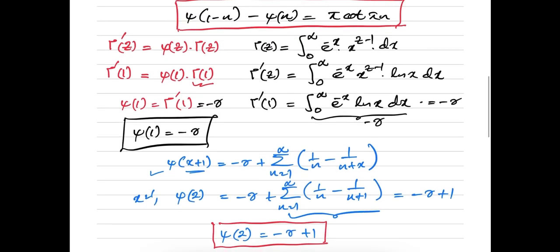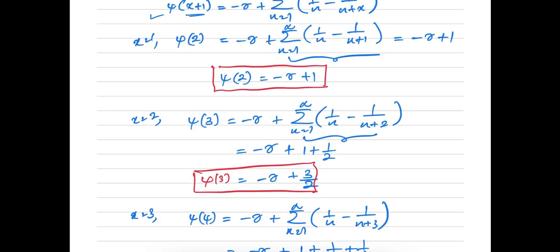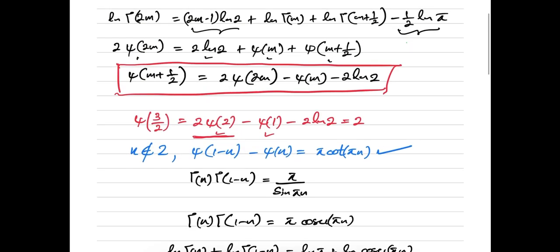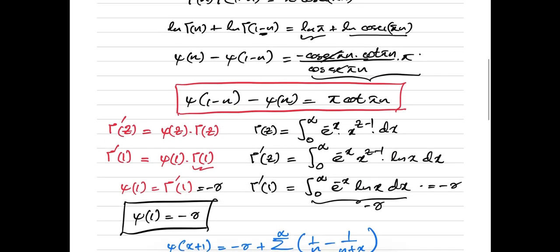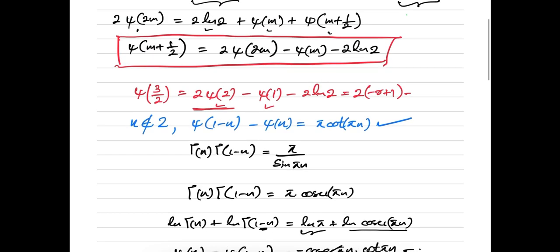Now we find the value of ψ(3/2). Using the duplication formula with m = 1: ψ(3/2) = 2·ψ(2) - ψ(1) - 2·ln 2. We found ψ(2) = -γ + 1 and ψ(1) = -γ. So ψ(3/2) = 2(-γ + 1) - (-γ) - 2·ln 2 = -2γ + 2 + γ - 2·ln 2 = -γ + 2 - 2·ln 2.